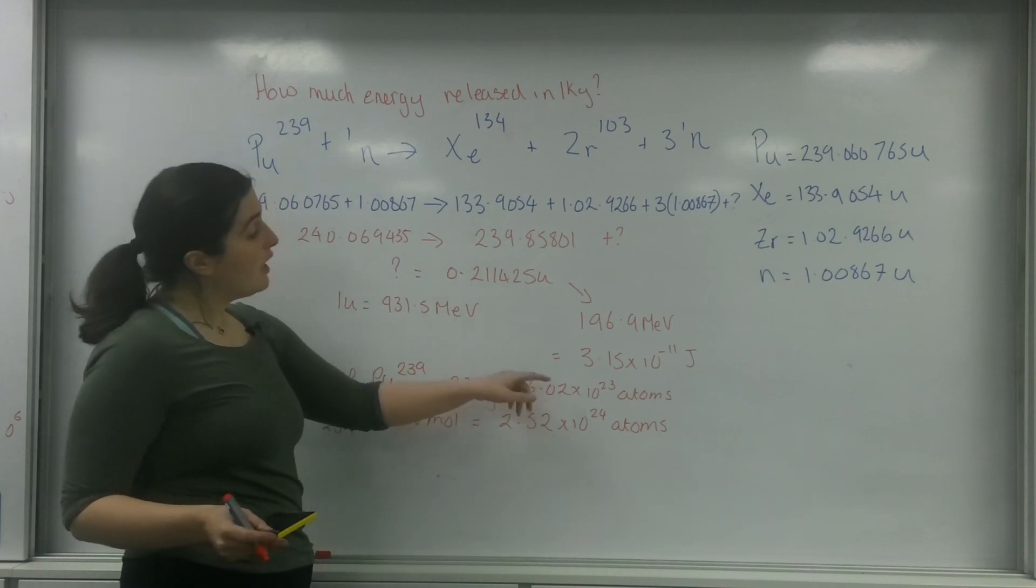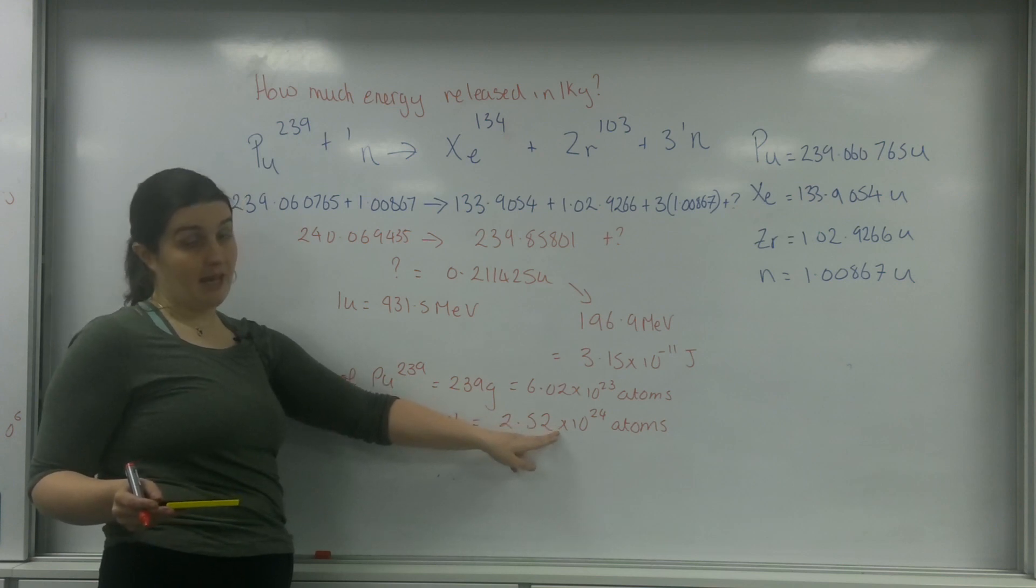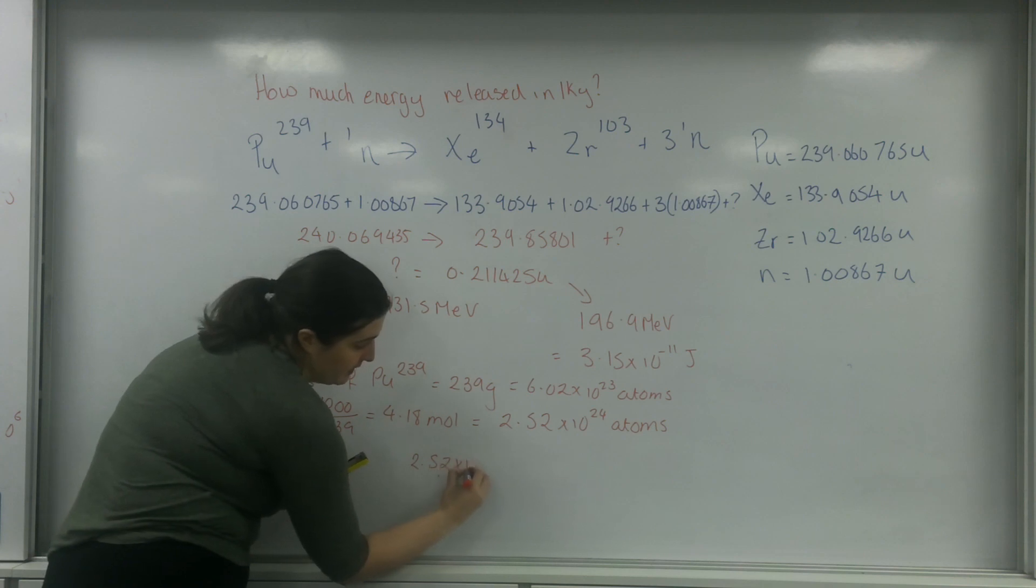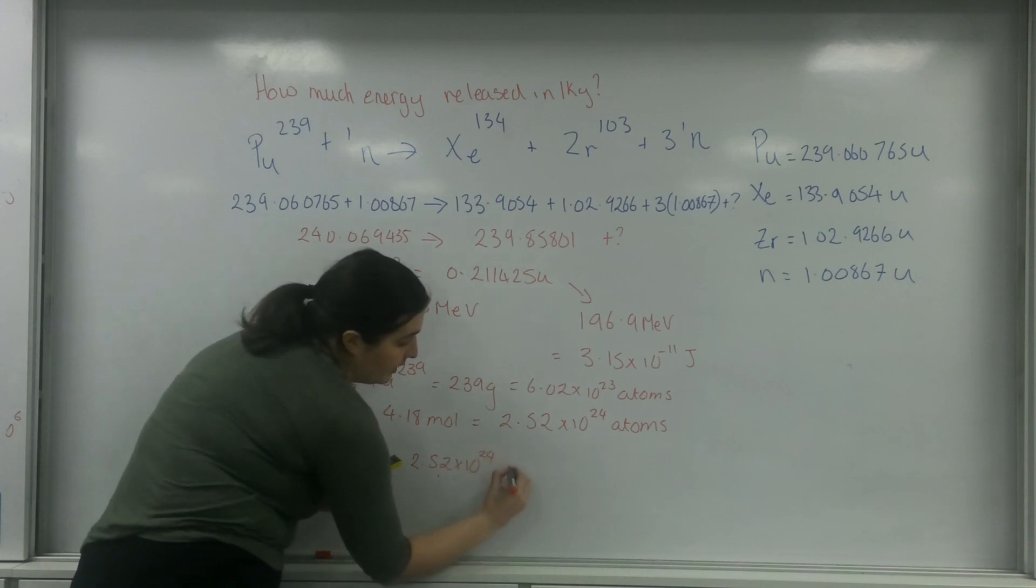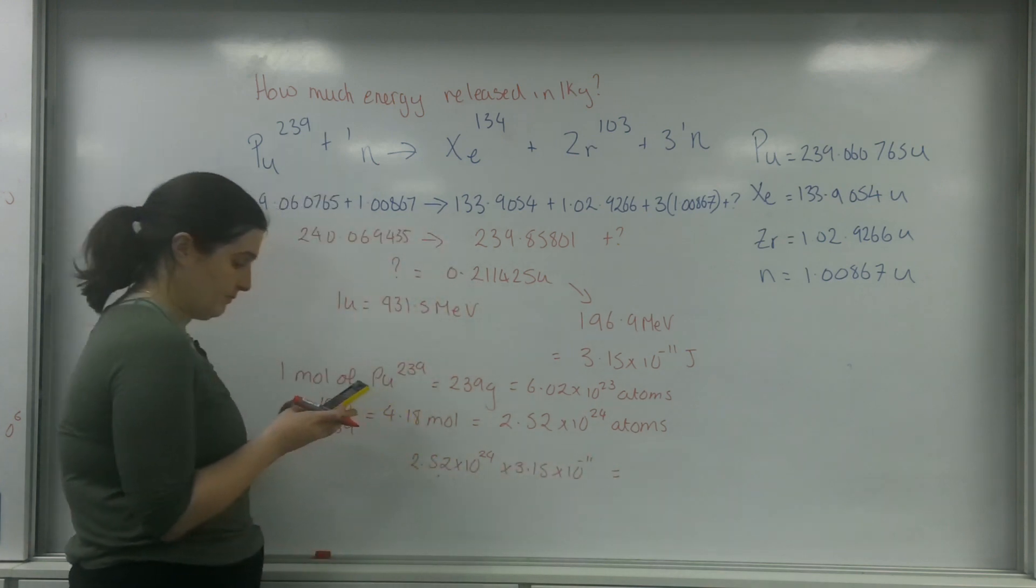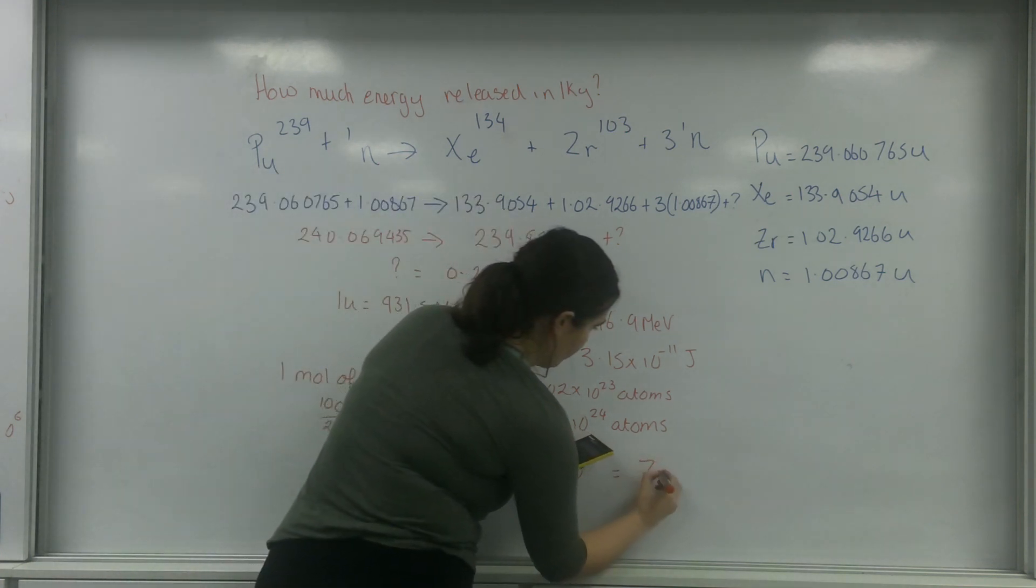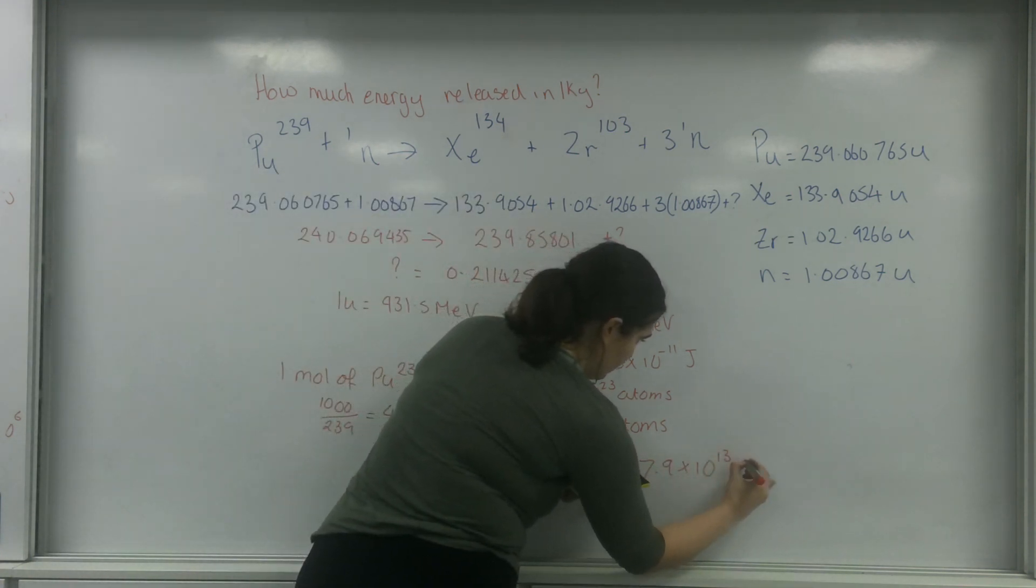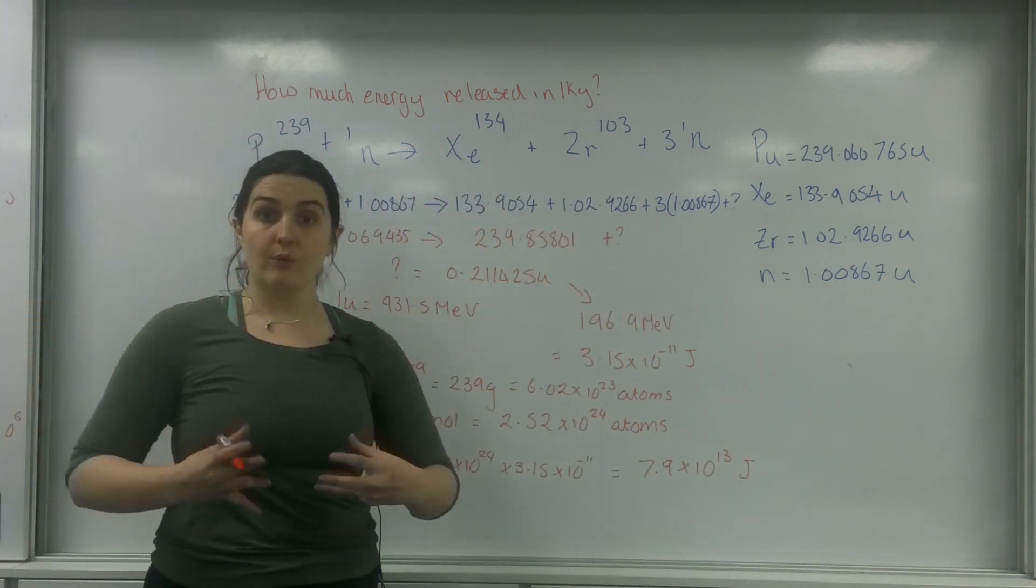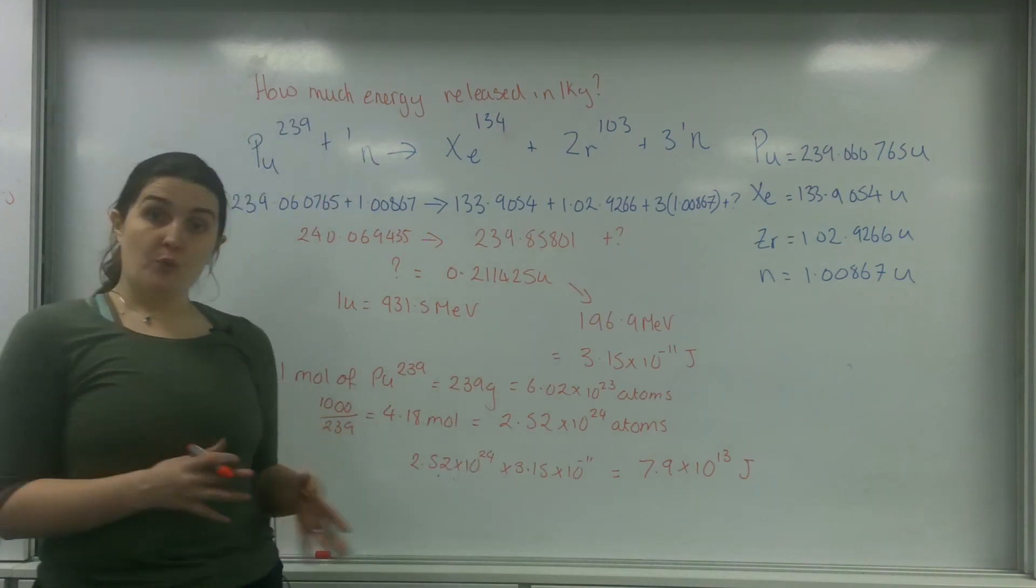If one reaction releases this much, I need to find out how much energy this many reactions will produce. So 2.52 times 10 to the 24 times by 3.15 times 10 to the minus 11 gives me 7.9 times 10 to the 13 joules. That's how many joules will be released in total if all one kilogram decayed at once.